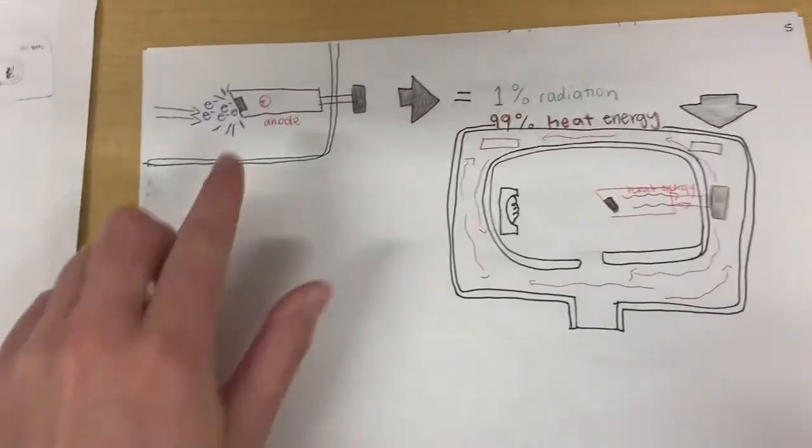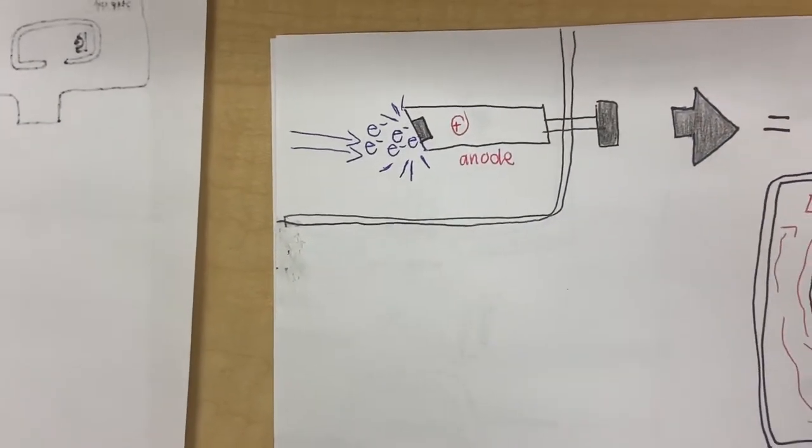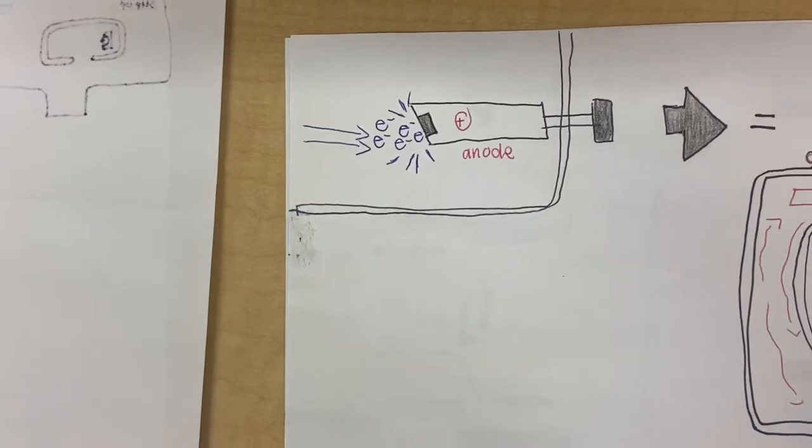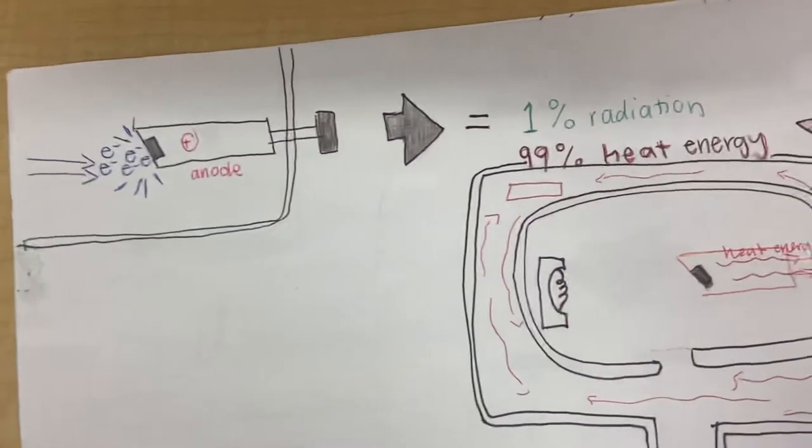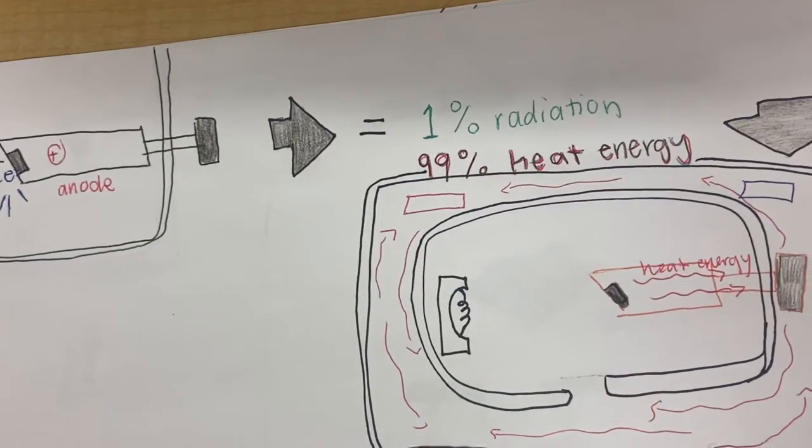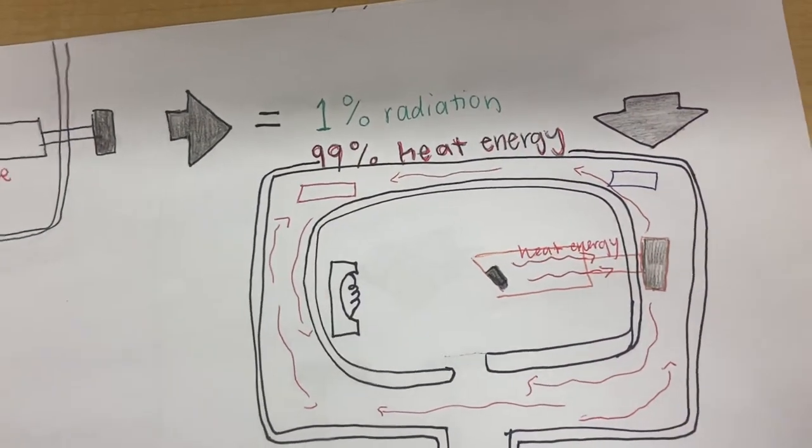Going on, the electrons will then collide with the tungsten target at the end of the anode. When the electrons hit the target, it results in X-ray radiation. Out of all the kinetic energy, 1% will be radiation, and the other 99% will be lost in heat energy.